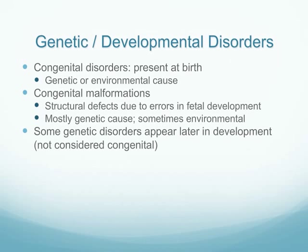To explore the background of genetic and developmental disorders, we want to differentiate between congenital disorders — those that are present at birth — which may have either a genetic or an environmental cause, or we can have malformations that cause defects within organs that may cause a disease process later in life, for example if the person were to have a malformation of the heart or some other organ that could cause heart failure or other organ failure later on.